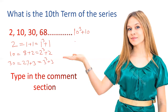So the 10th term is 10 cube plus 10, that is 1,000 plus 10, that is 1,010. So this series ka 10th item is 1,010.